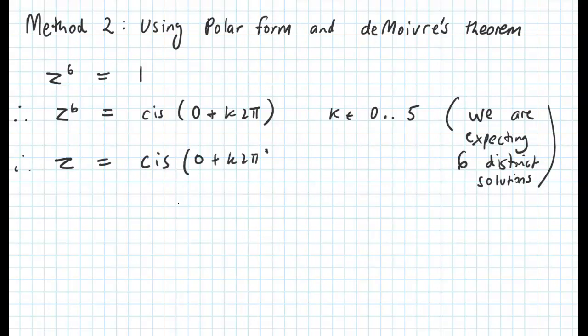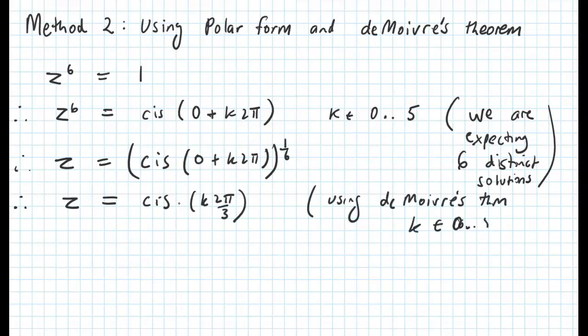The next step is to take the sixth root on both sides. Having done that, we can now apply De Moivre's theorem, and that simplifies to cis k lots of 2 pi over 3. Remember we're setting k between 0 and 5.